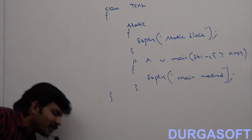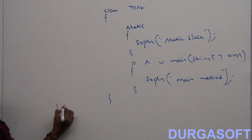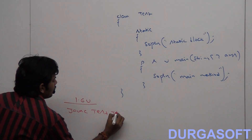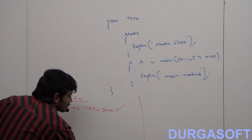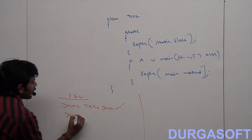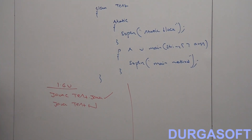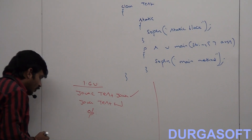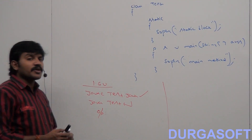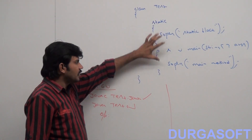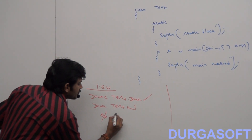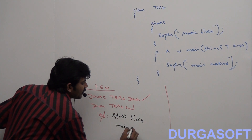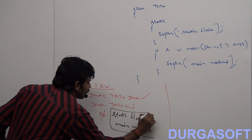Now, in the 1.6 version, how is the behavior? If I compile javac Tester.java — does the code compile or not? Yes. If I run Java Tester — is it going to run or not? Yes. Can you tell what output we are going to get? In the 1.6 version: first static block, and then main method.